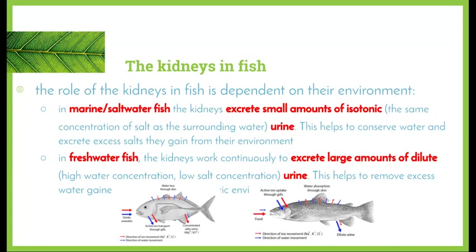Being in a salty environment, salt is able to enter the fish much more easily, so because of this excess salt entering, they need to get rid of those excess salts. In freshwater fish, the kidneys work continuously to excrete large amounts of dilute — high water concentration, low salt concentration — urine. This helps to remove the excess water gained from their hypotonic environment.